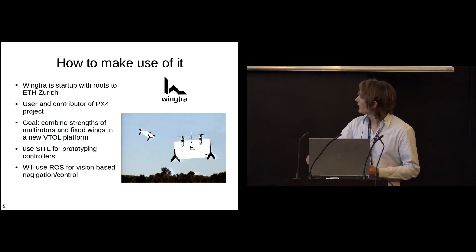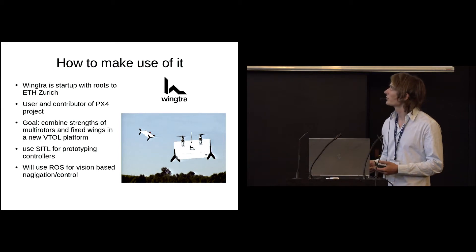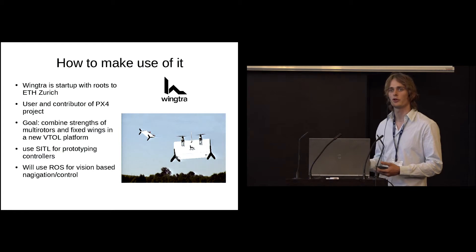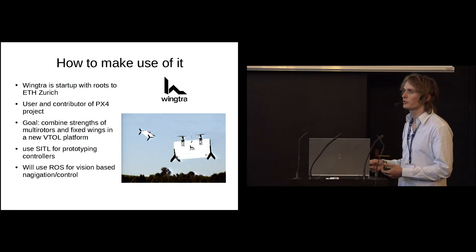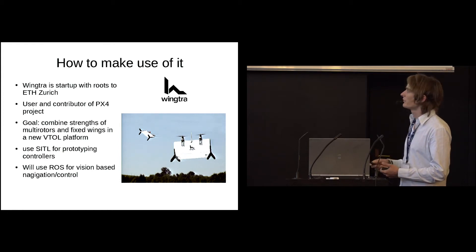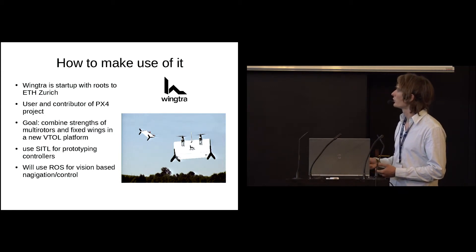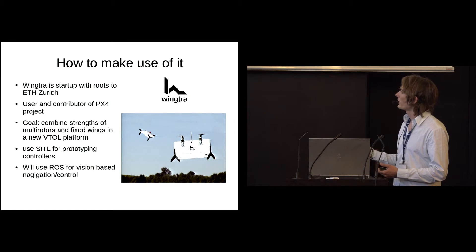I'm going to introduce you to a company called Wingtra. Wingtra is a startup with roots at ETH Zurich. Their goal is to combine the strengths of both multi-rotors and fixed wings into a new design — a tail-sitter model which is able to hover and do precise landings, but still fly very efficiently as a fixed wing. They are actively using our software-in-the-loop environment with ROS for prototyping their controllers. They prototype algorithms, test them in the SITL environment, then do flight tests, and they also plan to use ROS for vision-based navigation and control in the future.